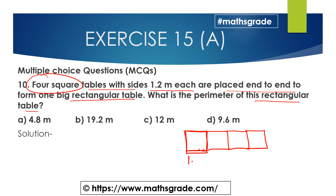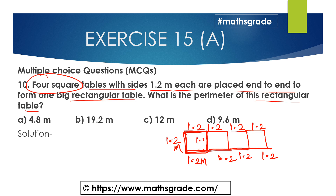The sides of each square table are 1.2 meters. Since all sides of a square are equal, each side of every square table is 1.2 meters.